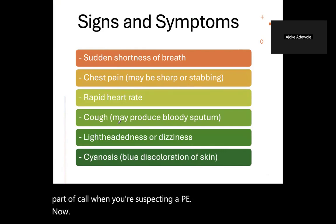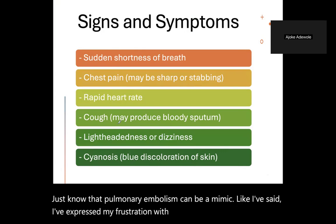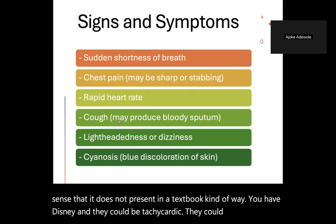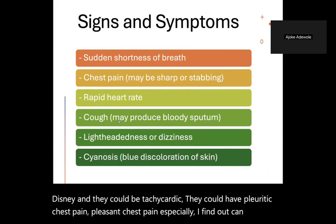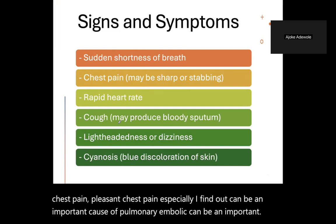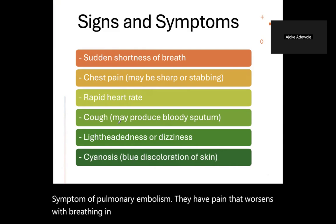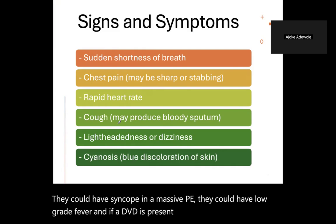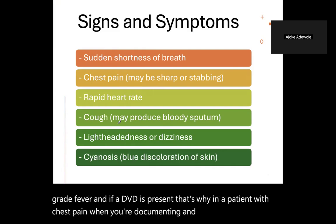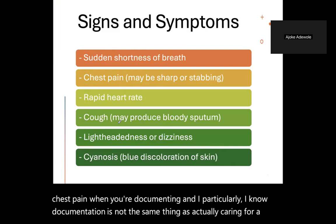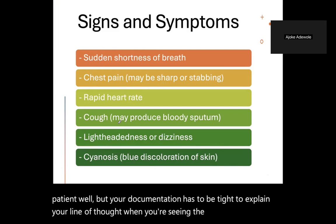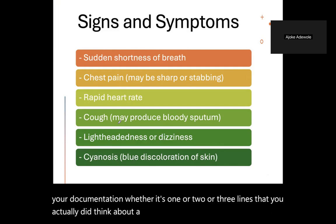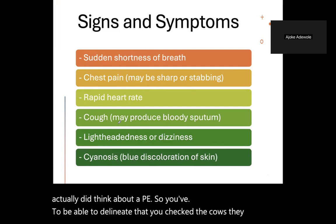Pulmonary embolism can be a mimic. It does not present in a textbook kind of way. You can have dyspnea, tachycardia, pleuritic chest pain — pain that worsens with breathing and inspiration — syncope in a massive PE, low-grade fever, and if a DVT is present, swollen calves. When documenting a chest pain patient, you need to show your line of thought — document that you checked the calves, they were soft and non-tender, and that is why you did not suspect a PE.